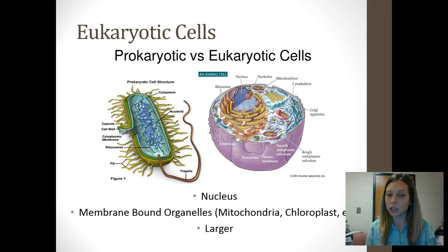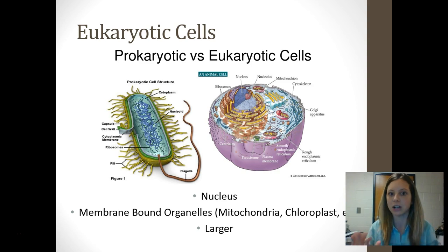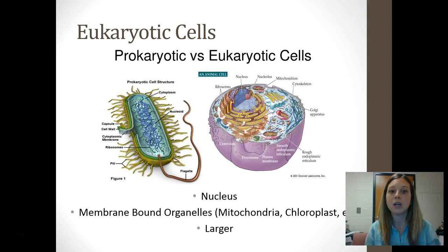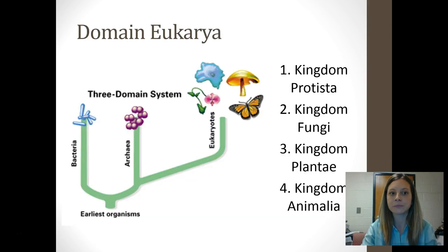Eukaryotic cells do have a nucleus and they do have those fancy membrane-bound organelles — mitochondria, chloroplasts, Golgi body, endoplasmic reticulum — which makes them much more complex, meaning that they are much larger cells.